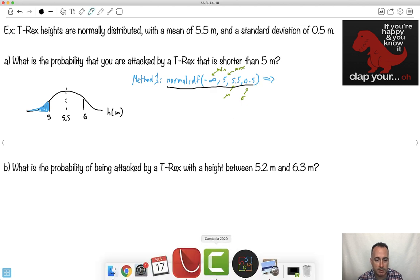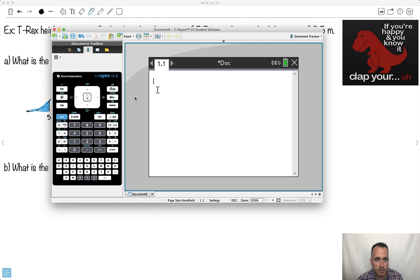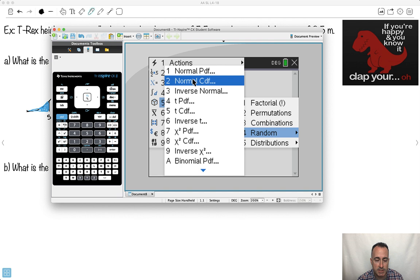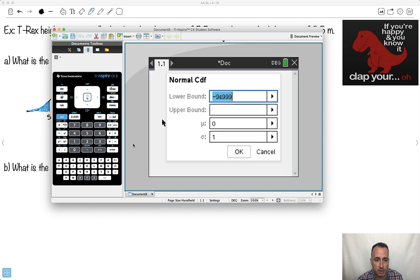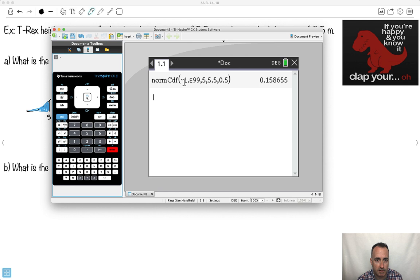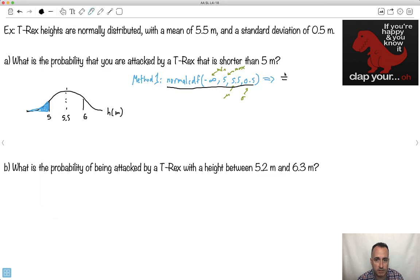I'll get out my trusted calculator here. Calculator, please help. I'll go to menu, go to probability, distributions, and I'll say normal CDF. Where's my lower bound? I'll just say minus 1 times 10 to the 99, just like a really big negative number. Upper bound is 5. Mean is 5.5. Standard deviation is 0.5. Say go. Notice: normal CDF, min, max, mean, standard deviation. It says it's 0.159. So it's approximately 0.159. That was one method of doing this, and I'm done.